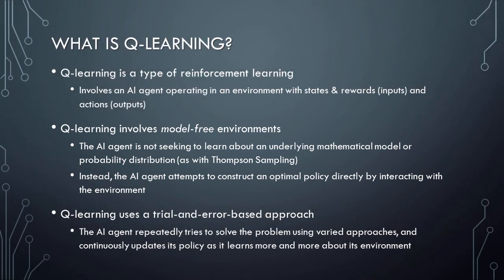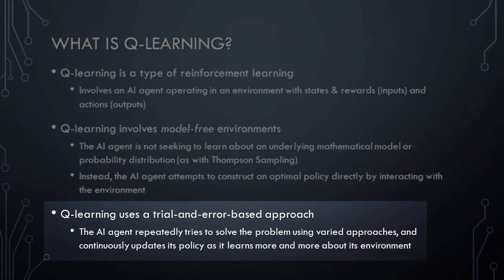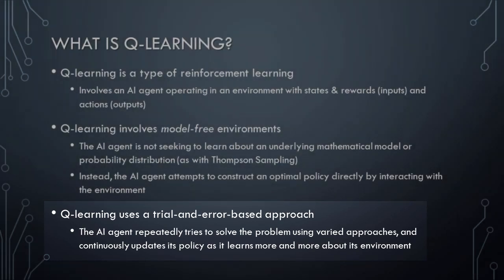The AI agent does this by adopting an explicit trial-and-error-based technique in which the agent learns by repeatedly attempting to solve the problem using varied approaches across many different episodes while continuously updating its policy with what it has learned.